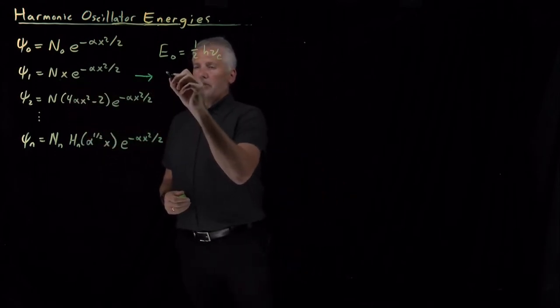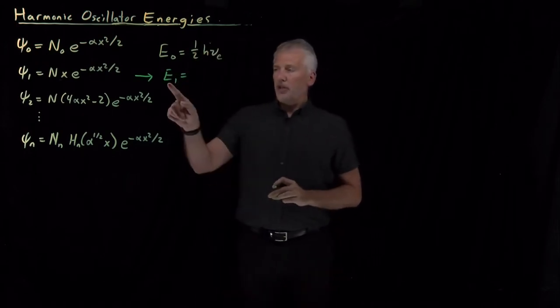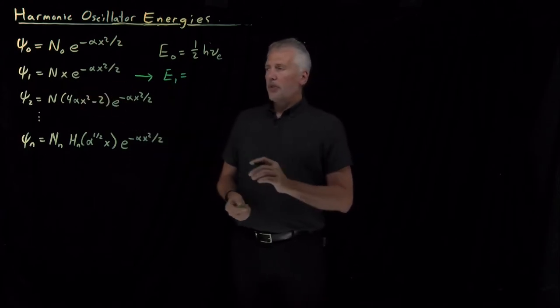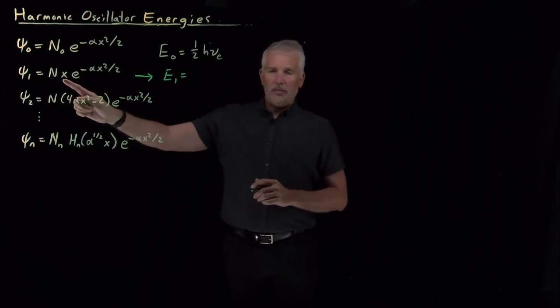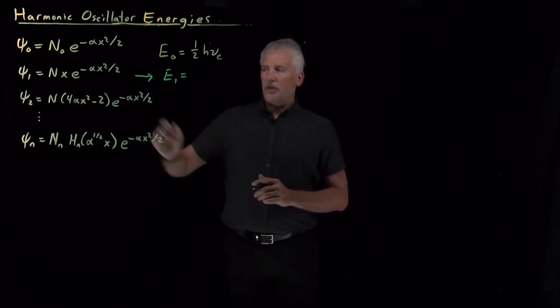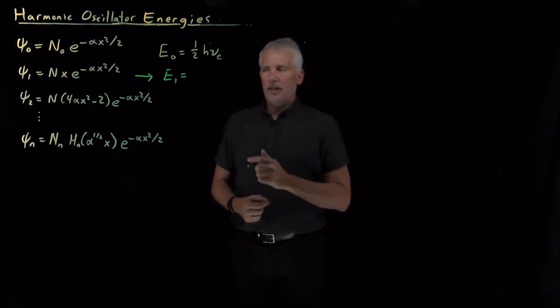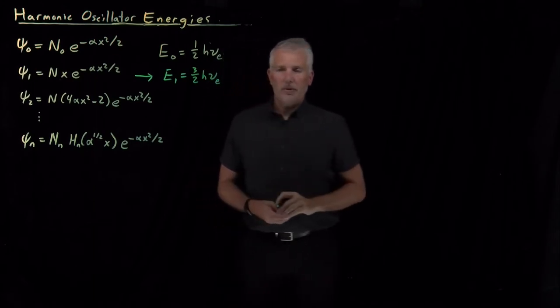Some terms will cancel. The terms that don't cancel will end up telling you the energy of the wave function multiplied by the original wave function, and we'll see that if I plug this function with the linear polynomial out in front of the Gaussian into Schrodinger equation, I don't get one-half times h times nu as the energy of the wave function. I get three-halves times h times the frequency.